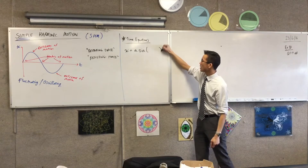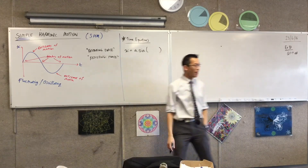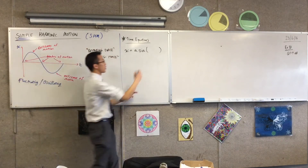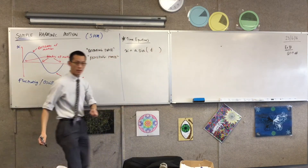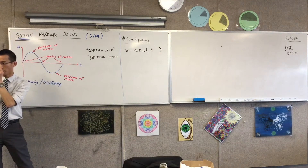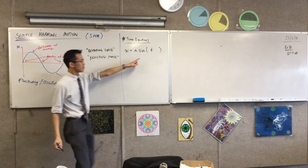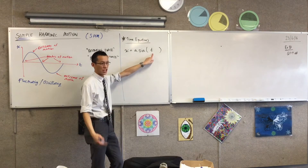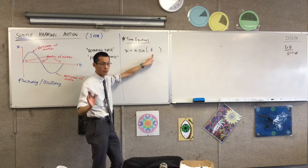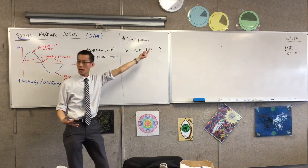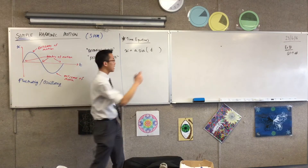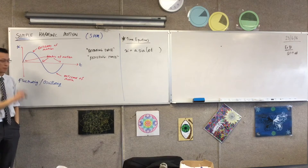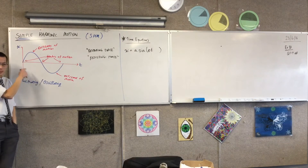And then what are you going to have in here? This is all in terms of time — this is the time equation. So there's going to be a T in here somewhere, but you don't know the frequency. At the moment, the period of this particular motion will be 2π seconds, minutes, hours, whatever it is. If I wanted to change that, how would I adjust the frequency? I need a new constant in there.